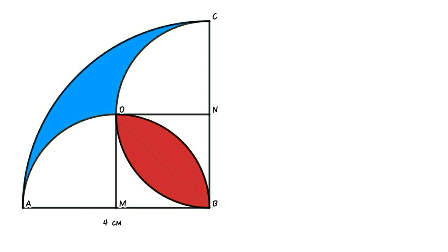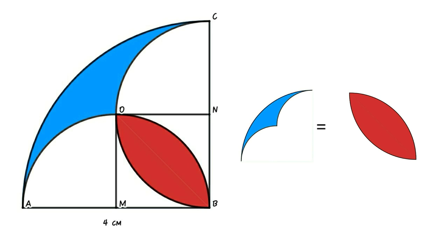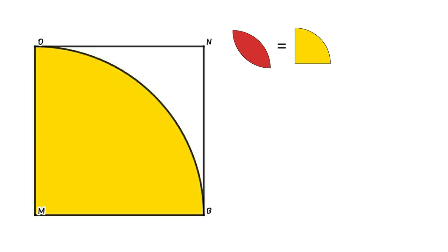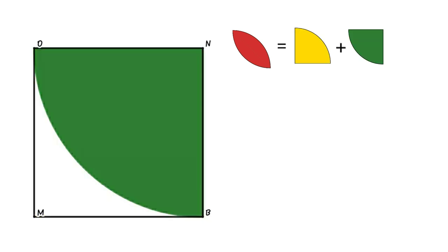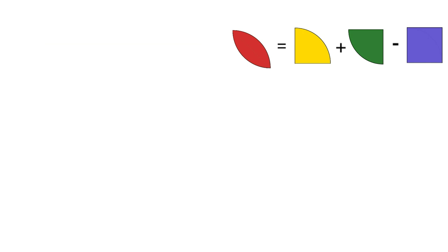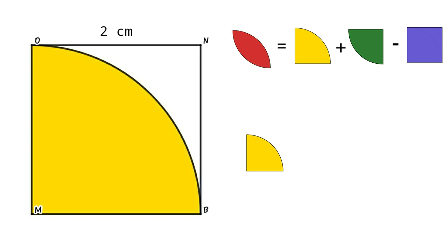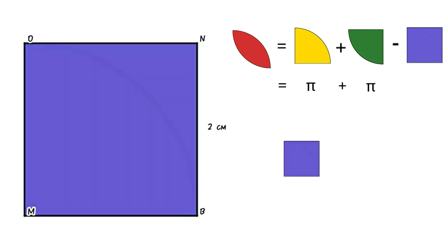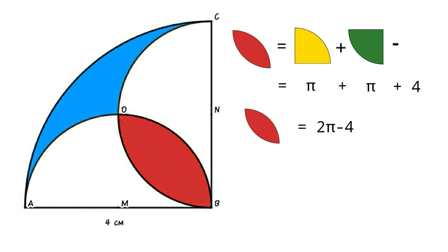Method 4: From the previous method, area of blue shape equals area of the red lens. From square MBNO, area of lens equals area of one quarter circle plus area of another quarter circle minus area of the square. Each quarter circle has area (1/4) × π × 2² = π, and the square has area 2 × 2 = 4. So area of red lens equals 2π − 4, and therefore area of blue region equals 2π − 4 cm².